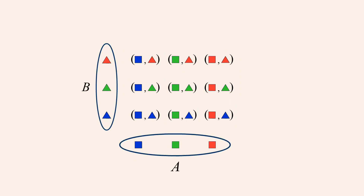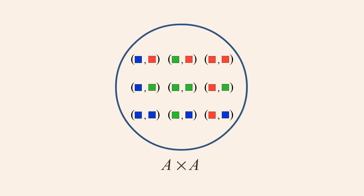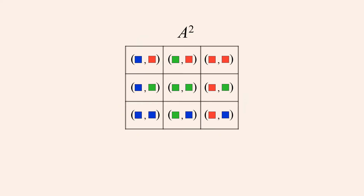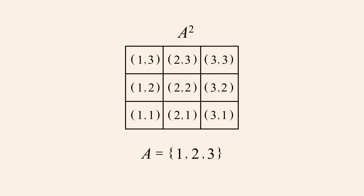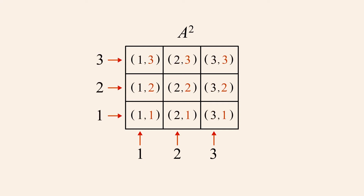It is not necessary for each operand of a Cartesian product to be a different set. For instance, we can form the Cartesian product of set A with itself. This can be written as the Cartesian product of A and A, or A squared. We can locate any horizontal and vertical position within the grid by specifying the colors of each element. Or, if instead of set A containing colored squares, set A contained numbers, we could locate any position in the grid by specifying the numerical value of the first and second elements of an ordered pair.